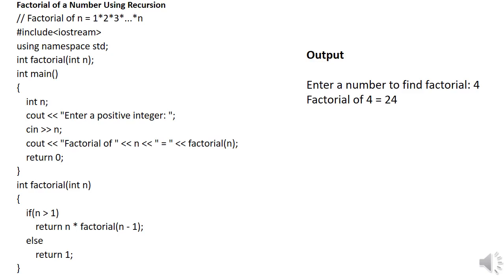Factorial of 3 is called inside the factorial function. The control again goes to the beginning of the function definition and checks if 3 is greater than 1 — the condition is true. It will perform 3 into factorial of n minus 1, which is factorial of 2. Again it is calling by itself. The control goes to the beginning and checks if 2 is greater than 1 — the condition is true. It will perform 2 into factorial of 1. The control goes to the beginning and checks if 1 is greater than 1 — the condition is not true. So the control goes to the else part and returns the value 1.